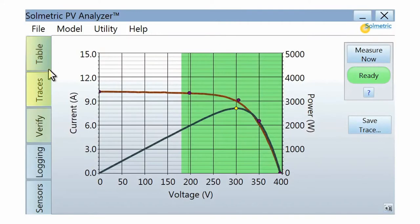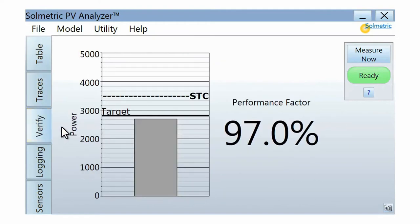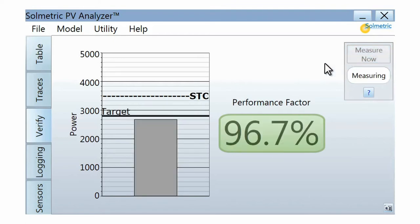The results can be viewed in various formats. The Verify tab shows a simple percentage value that represents the measured power output as a percentage of the power predicted by the performance model. This percentage is called the Performance Factor, and it provides a quick and simple method of performance verification.